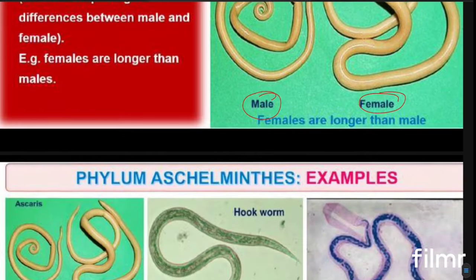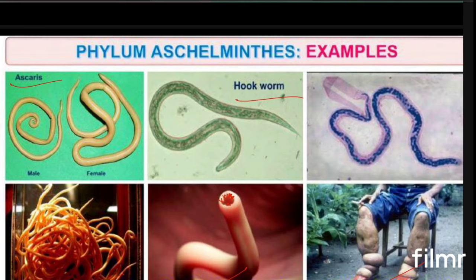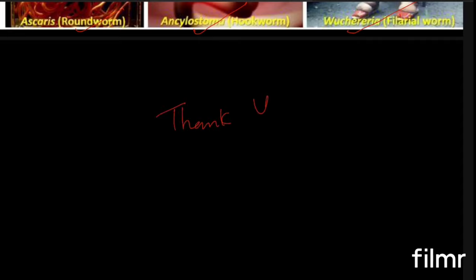Some major examples are Ascaris, known as the roundworm; Ancylostoma, known as the hookworm — which has special hooks present in its mouth-like structure; and Wuchereria bancrofti, otherwise known as the filarial worm, which is responsible for elephantiasis, also known as hathi paon disease. These are the major examples of Aschelminthes. I hope you have a clear idea about Phylum Aschelminthes. Thank you for watching and supporting.